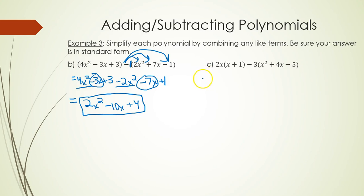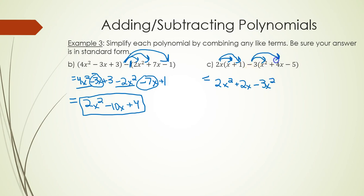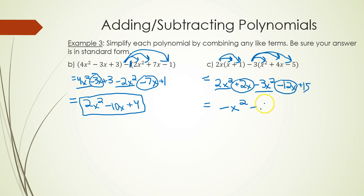In part c, we have two things to distribute. 2x times x is 2x squared, 2x times 1 is plus 2x. Negative 3 times x squared is negative 3x squared, negative 3 times 4x is negative 12x, negative 3 times negative 5 is plus 15. Combining like terms: 2x squared minus 3x squared is negative x squared, plus 2x minus 12x is negative 10x, and plus 15. The answer is negative x squared minus 10x plus 15.